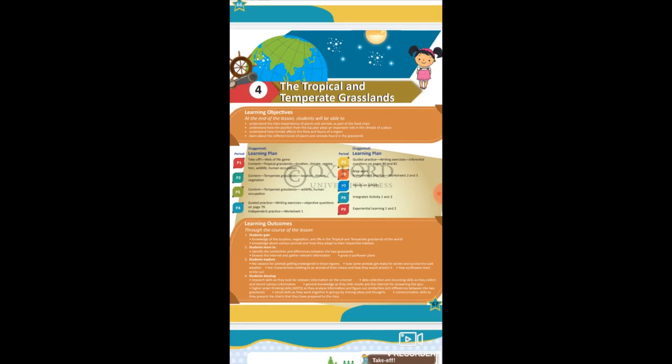Grasslands are classified into two types: tropical grasslands and temperate grasslands. First, we are going to learn about tropical grasslands — its location, its climate, vegetation, wildlife, and human occupation.